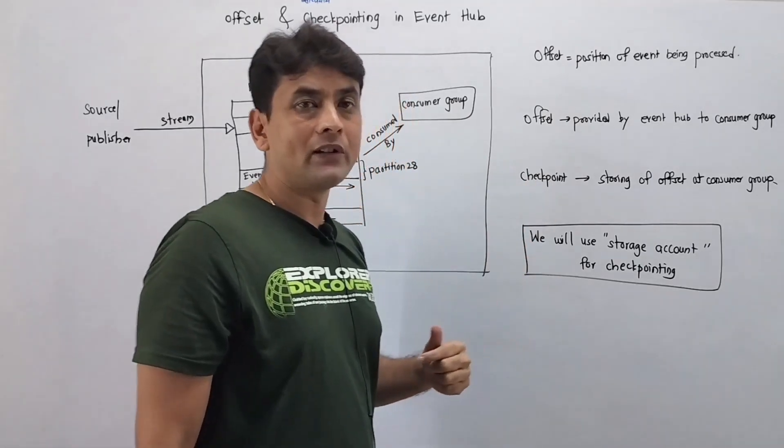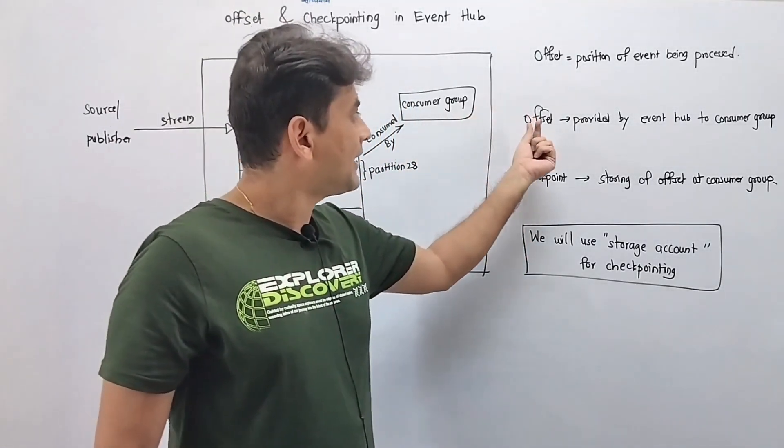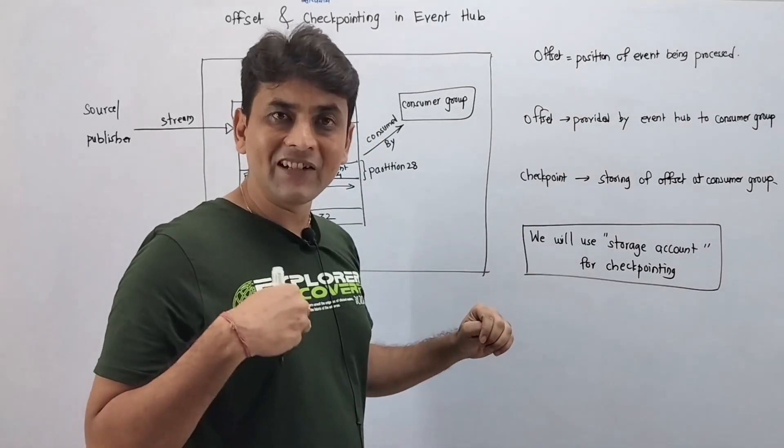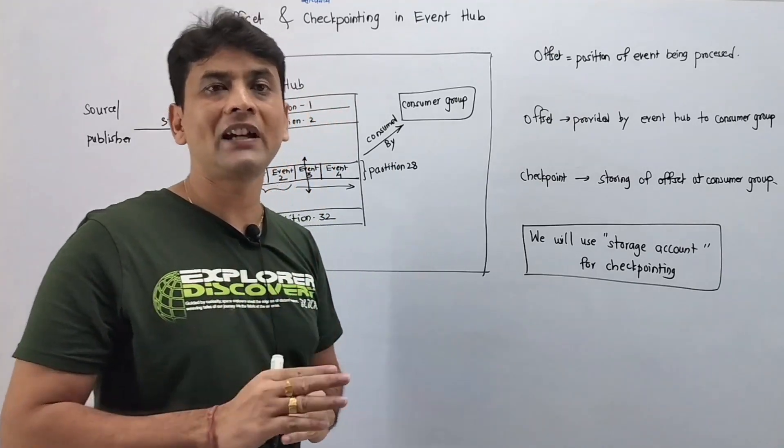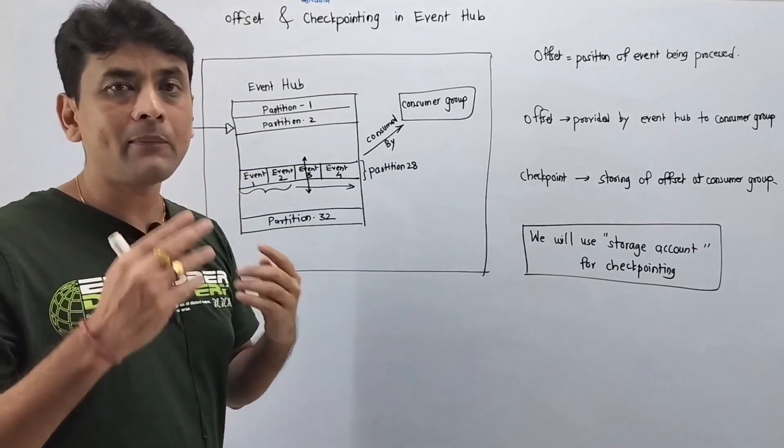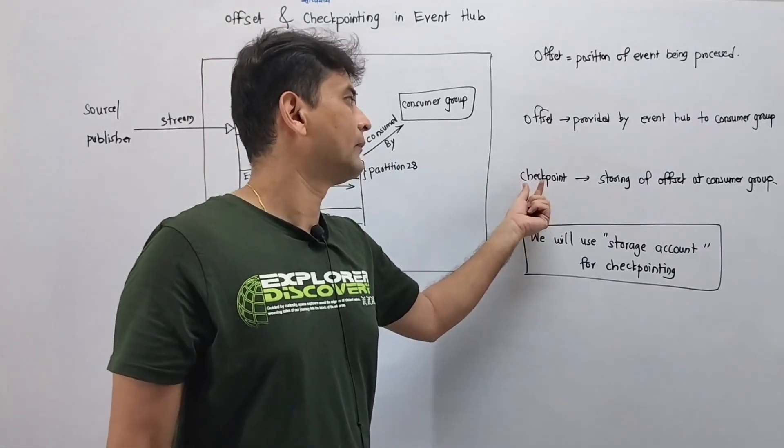What is the checkpoint? As offset is provided by the Event Hub to the consumer group, it's the responsibility of the consumer group to store or save that offset somewhere. That process is called checkpoint—it's storing of offset at consumer group.